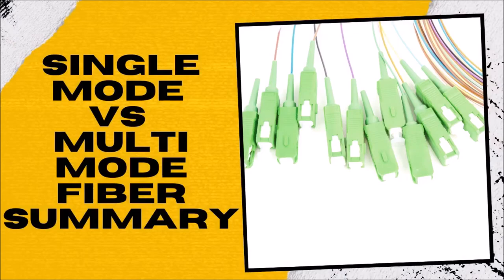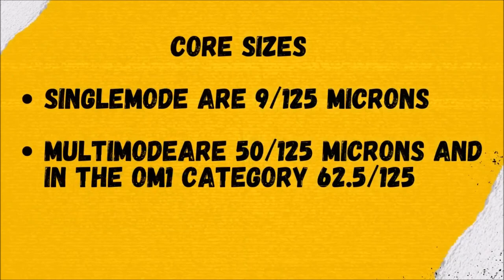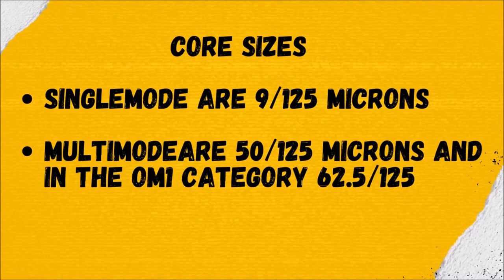Single mode versus multimode fiber summary. Core sizes: single mode are 9 by 125 microns. Multimode are 50 by 125 microns, and in the OM1 category 62.5 by 125.